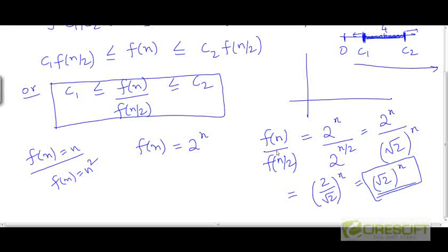For example, when n is equal to 10, the ratio of f(n) to f(n/2) is going to be √2 to the power 10, or 2⁵, which is 32. So, if we take n to be 14, then the ratio is going to be √2 to the power 14, which is 2⁷, which is 128.